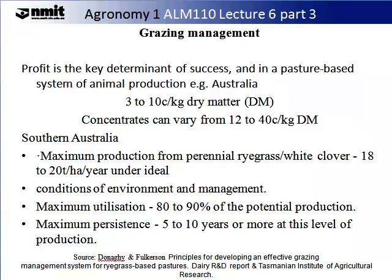To give an example of ryegrass production in South Australia, the maximum production from a perennial ryegrass white clover mix was 18 to 20 tonnes per hectare per year under ideal environmental conditions and ideal management. The maximum utilisation is between 80 to 90% of this potential production, and the maximum persistence is about 5 to 10 years or more. It is always worth researching what your area and pasture type should ideally be producing so you can assess whether you need to improve your system's efficiencies.